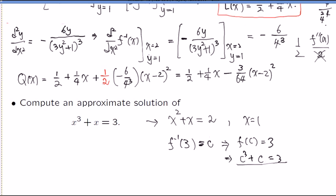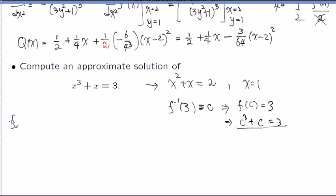So, what was f inverse x roughly? 1 over 2 plus 1 fourth x minus 3 over 64 x minus 2 squared. This is the approximation. This is supposed to be a good approximation as long as x is close to what? 2. This is the approximation around x equals 2. And x equals 2 still remain there. So x equals 3 seems like close enough. And then you stick it in there. x equals 3 there.